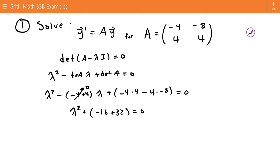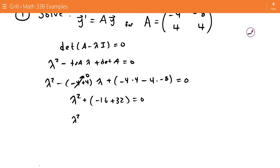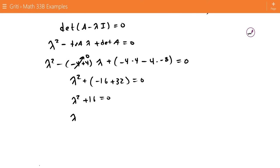This is going to be negative 16 plus 32. This all equals 0. So we get lambda squared plus 16 equals 0. This gives us the eigenvalues lambda equals 4i and lambda equals negative 4i.